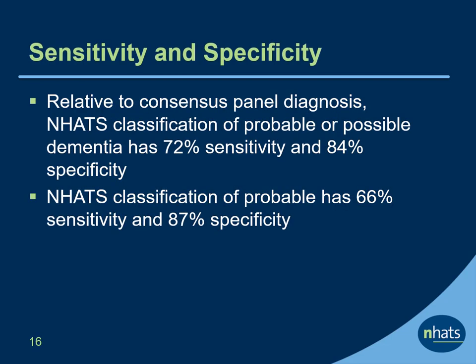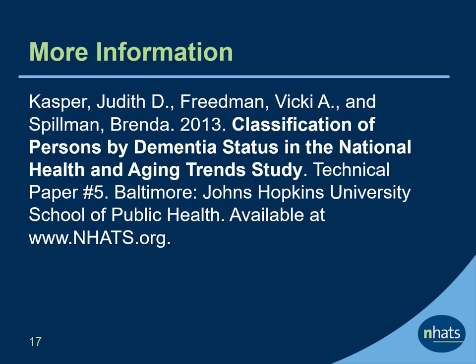The NHATS dementia classification aligns well with a consensus panel diagnosis based on several hours of in-home testing. For probable or possible dementia, the NHATS classification has 72% sensitivity and 84% specificity. The NHATS probable dementia classification has 66% sensitivity and 87% specificity. For more information on the NHATS dementia classification, including code to create the measures, see NHATS technical paper number 5 available on the NHATS website.